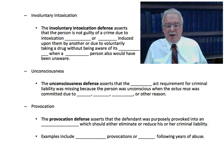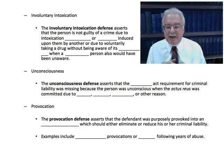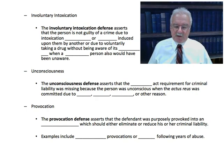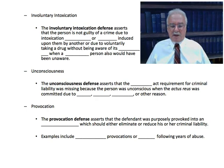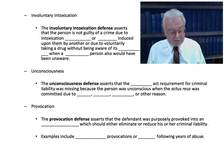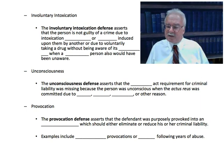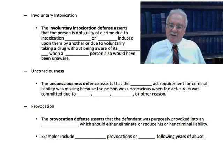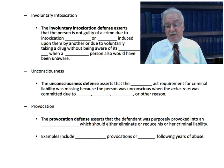The provocation defense asserts that the defendant was purposely provoked into an emotional rage which should either eliminate or reduce criminal liability. Examples might include barroom provocations — someone saying something deeply offensive — or family violence after years of abuse, where a woman regularly abused by her husband strikes out and kills or injures him. That becomes a difficult defense, however, because if the husband was not actually attacking her at that moment, self-defense doesn't apply and provocation is also difficult to prove, though it could still be a defense.